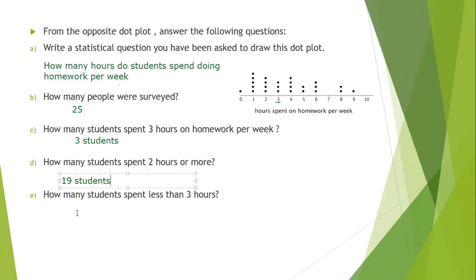E, how many students spent less than three hours? Less than three. Since it says less than three, the three is not with me. The last time it said two or more, meaning the two is with me or more. But here less than three, so I don't take the three with me. I'll count the two hours, one hour and zero. If I count them, they will be 10 students.